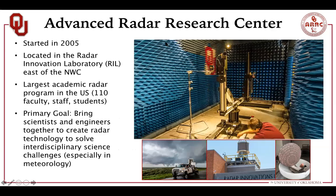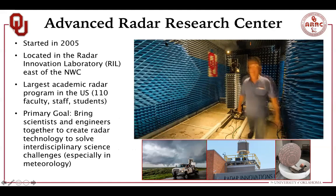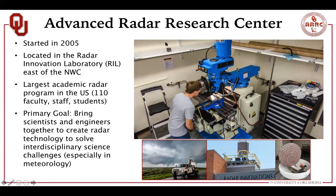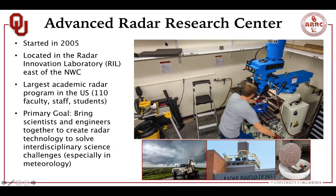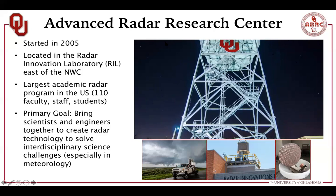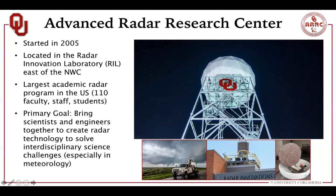The Advanced Radar Research Center was started at OU in 2005 and is located east of the National Weather Center at Jenkins and Highway 9 in Norman. The radar group here is the largest academic radar program in the country, with 110 faculty, staff, and students. Our goal is to bring scientists and engineers together to design, build, and then take radar systems out in the field to do research — often for projects like studying tornadoes to improve scientific understanding.